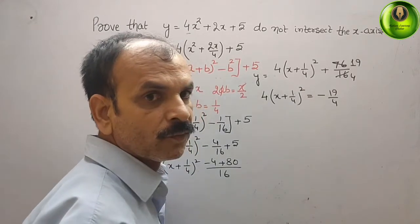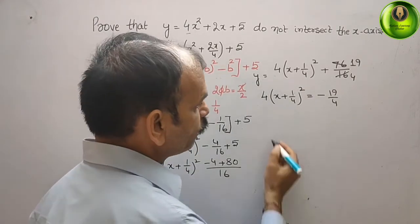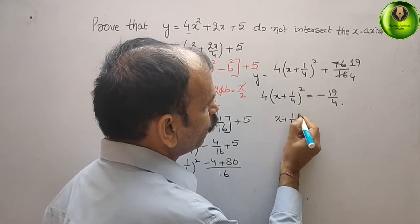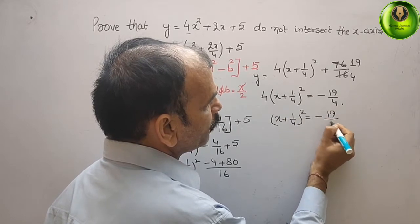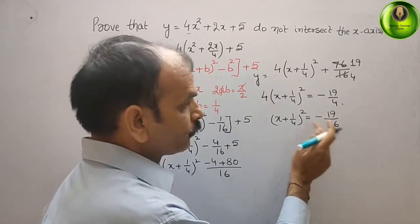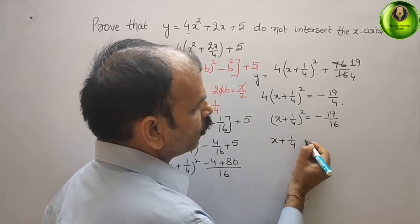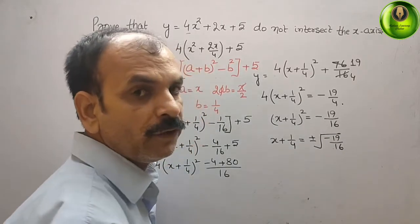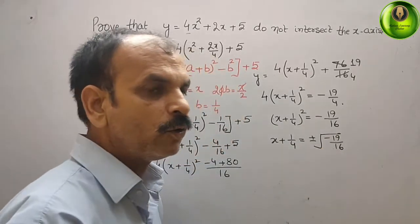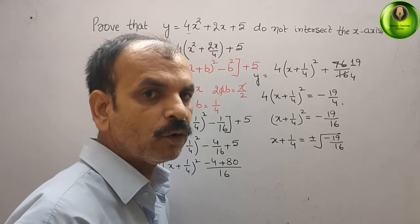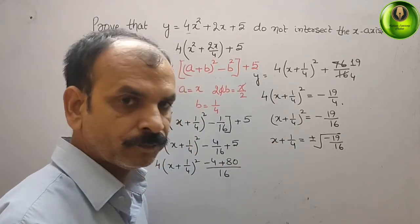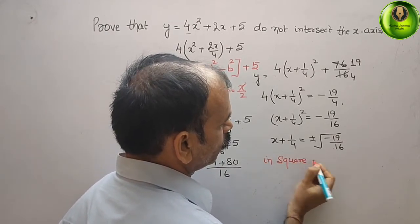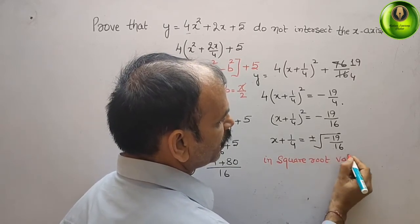This left side is a perfect square. Bringing the 4 to the right side gives (x + 1/4)² = −19/16. Taking the square root, x + 1/4 = ±√(−19/16). In the square root, we got a sign of minus — therefore this value of x cannot be found out, because the value inside the square root is negative.